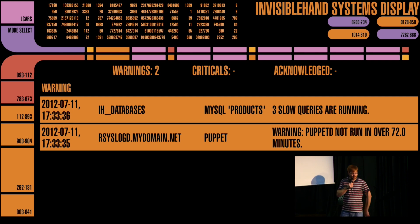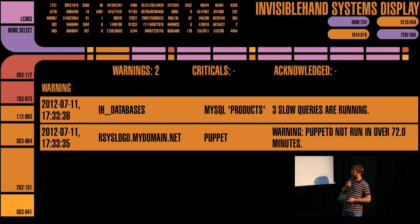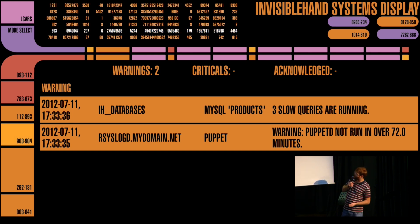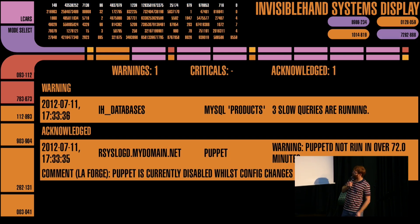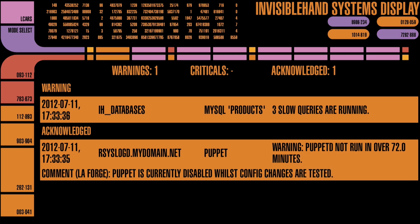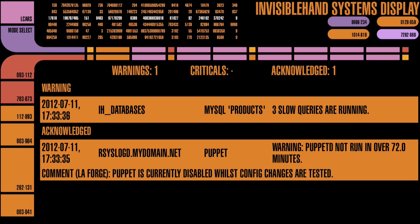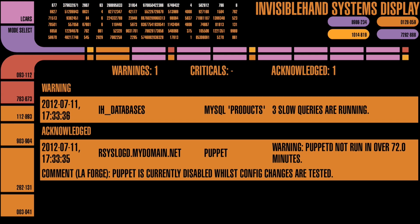We have an ability to read in acknowledgments from Nagios, so if a user comes in and acknowledges a service problem, then that gets taken off the warnings and put into the bottom of the screen, with the comment that Geordie has put in there for us nicely. We also support scrolling, so if multiple problems occur, the system will just scroll up and down between the alerts until you fix them all.